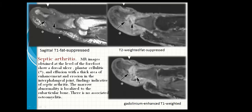Septic arthritis. MRI imaging obtained at the level of the forefoot shows a dorsal ulcer and plantar cellulitis with a thick area of enhancement and erosion in the interphalangeal joint — findings indicative of septic arthritis. The marrow abnormality is localized to the subarticular bone. There is no associated osteomyelitis.